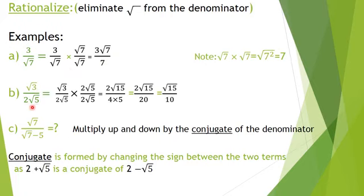Another example: I have a radical in the denominator. I'll copy it, then multiply up and down by 2 radical 5. Now let's multiply: 2 times 2 is 4, and radical 5 times radical 5 is 5, giving 20 in the denominator. On top, radical 3 times 2 radical 5 gives 2 radical 15.